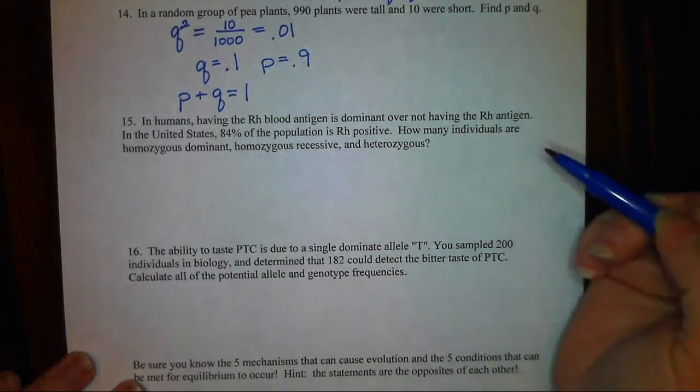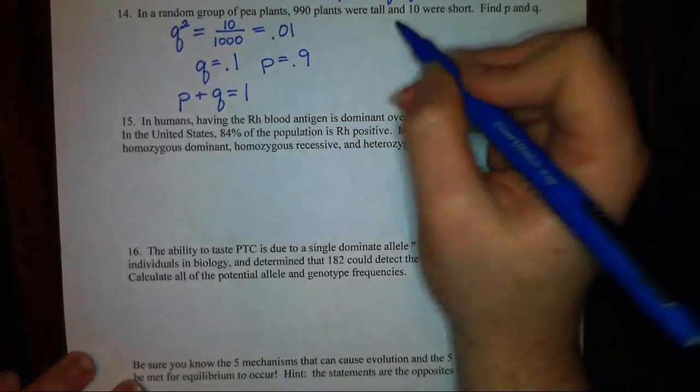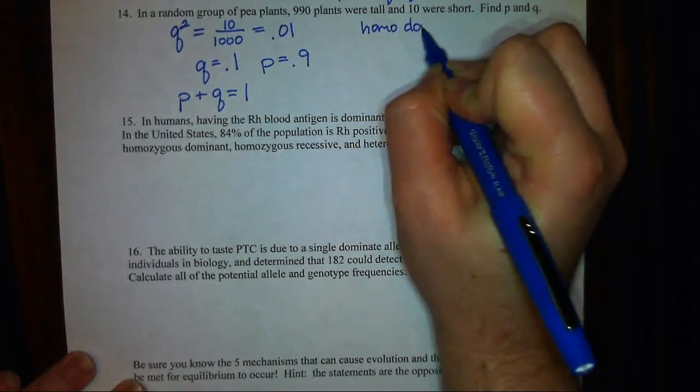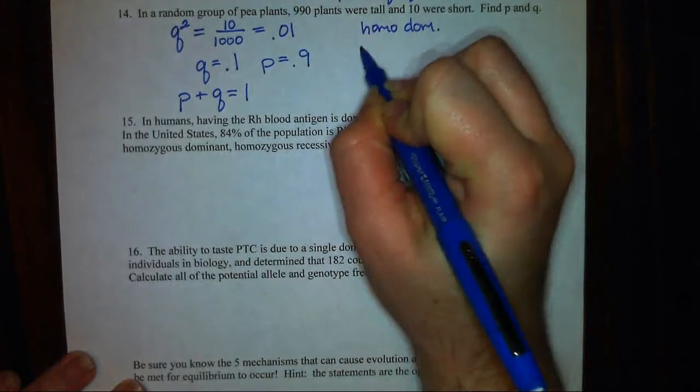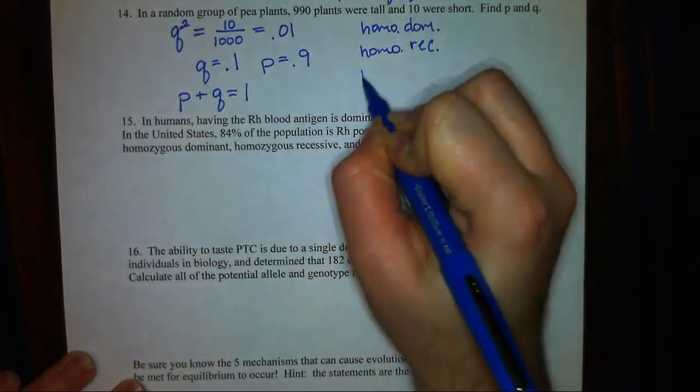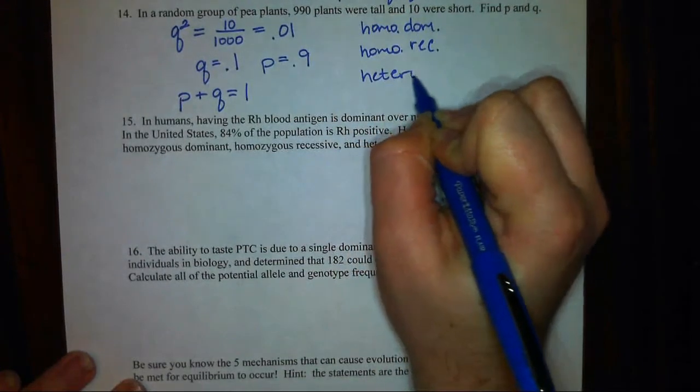It doesn't ask us to do this in the problem, but just to get extra practice, let's go ahead and figure out what percentage of the population is homozygous dominant. I'm going to abbreviate homozygous dominant, homozygous recessive, and heterozygous.